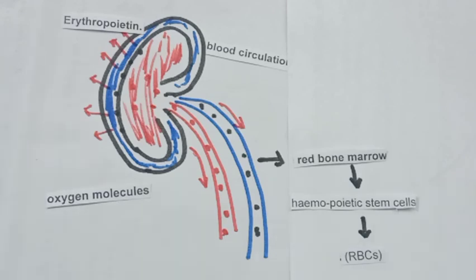So in the next video we will discuss calcitriol, a specific hormone also secreted from the kidney, which is the active form of vitamin D. Let us see in the next video clip about calcitriol.